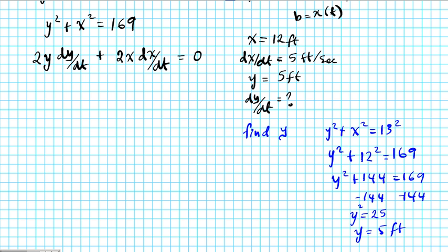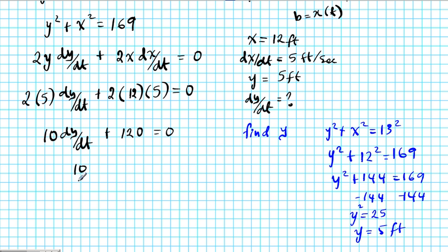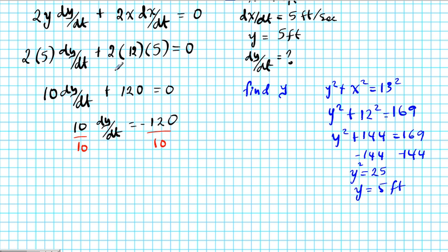Let's plug in the values. So we're going to have 2 times y is 5, dy/dt, that's what we're looking for, plus 2 times x is 12, dx/dt is 5, equals 0. So plug in all the information that we know, we're going to find what we need. So multiply this out. We're going to have 10 dy/dt plus 120 equals 0. Subtracting 120 from both sides, you have 10 dy/dt equals negative 120. And then finally you divide both sides by 10 and that will give us your answer. And then we'll have dy/dt equals negative 12. And this is feet per second.